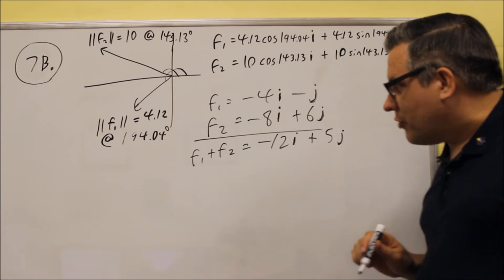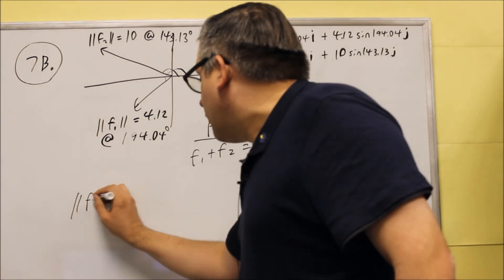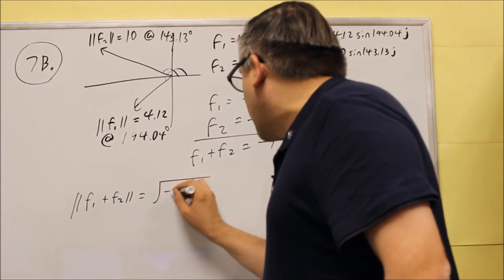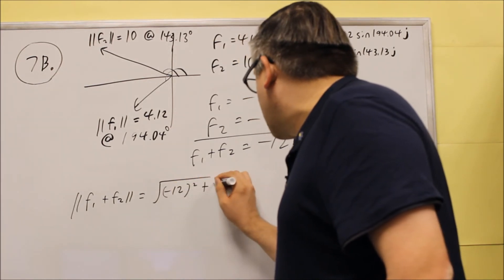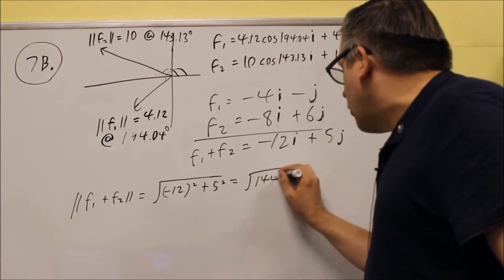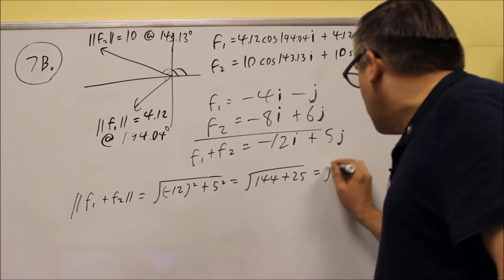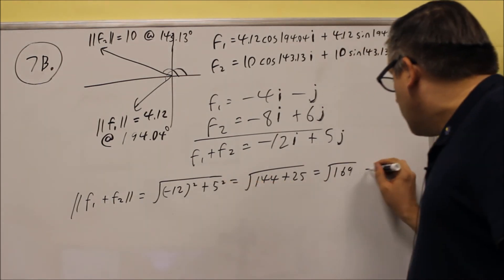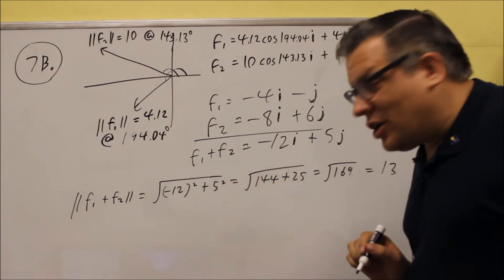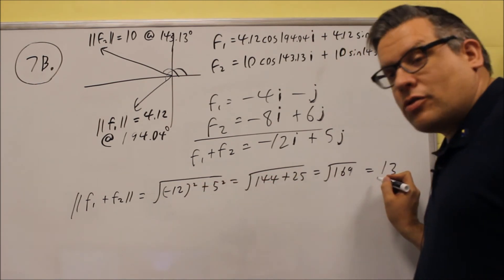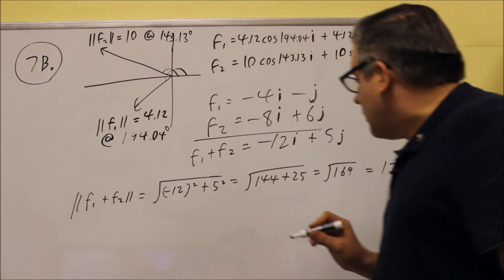So because of that, when we find the magnitude, the magnitude of F1 plus F2, we're going to do the square root of negative 12 squared plus 5 squared. And that gives us the square root of 144 plus 25, which is the square root of 169, which is going to be 13 we get for that one. So putting that in, we square all of them, we get 13 exactly.